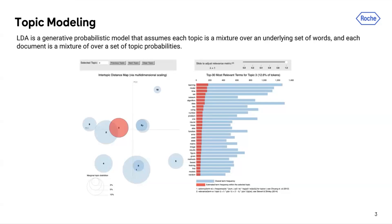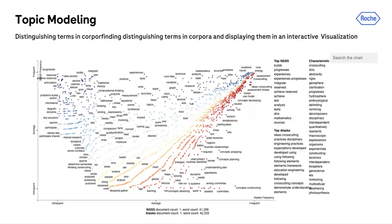Another thing I worked on was using a popular Python library called Scattertext. This is a Python package that lets you interactively visualize differences between two categories of text. Most of the work I did with Scattertext focuses on visualizing differences in single words and bigrams, and how different word frequencies relate across different categories. I can't share the actual visualizations due to confidentiality agreements, but this is just a sample of the work I was doing.